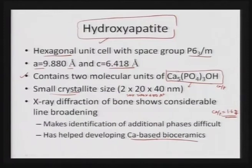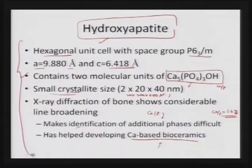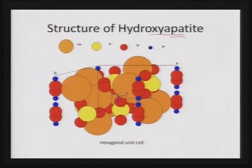Hydroxyapatite forms very nanometer-regime apatite crystals, and because of that the X-ray diffraction of the bone shows very high line broadening due to the nanocrystallinity of this inorganic component. That makes identification very difficult because there is so much line broadening and the background is generally very high for this particular ceramic component. Because of the presence of calcium and phosphate, those have led to the development of calcium-based bioceramics, which is now a major field of research in the biomedical industry.